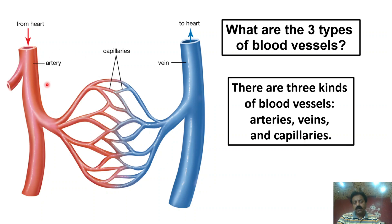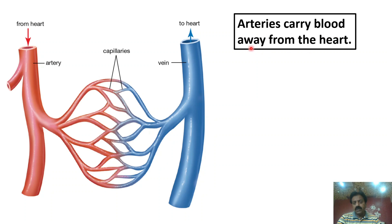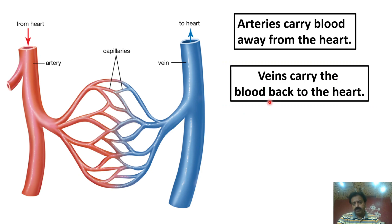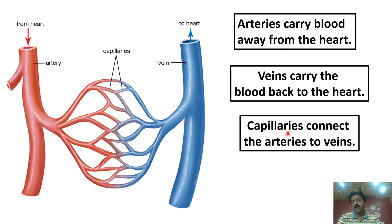First, we define artery. On the artery it says 'From Heart' — so arteries are blood vessels that carry blood away from the heart. Blood is transported through arteries to different organs. Blood then returns towards the heart through veins — on the vein it says 'To Heart'. Veins carry blood back to the heart. Between arteries and veins, there are small blood vessels called capillaries. Capillaries connect the arteries to the veins.